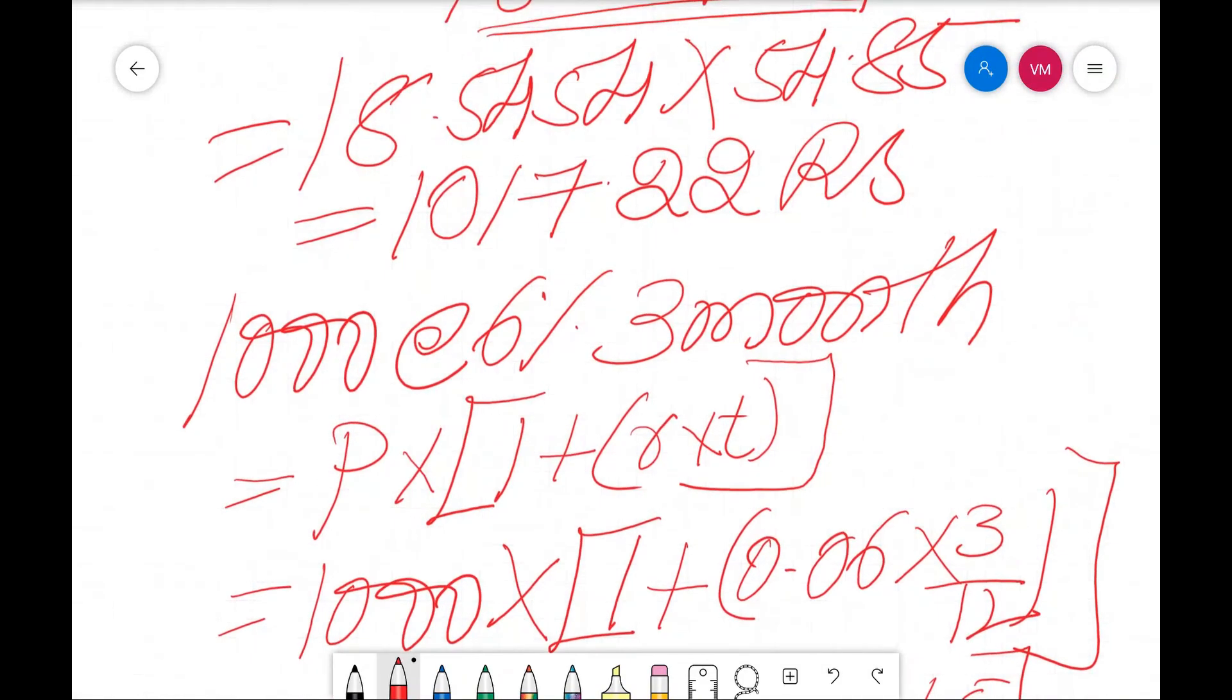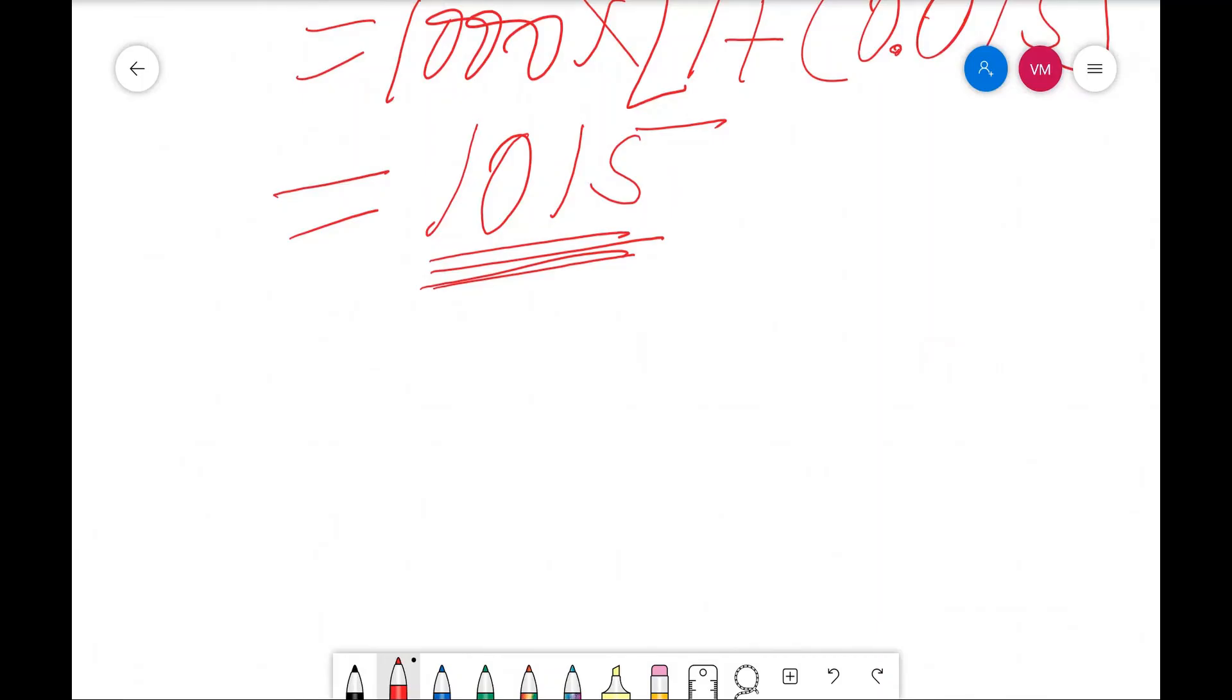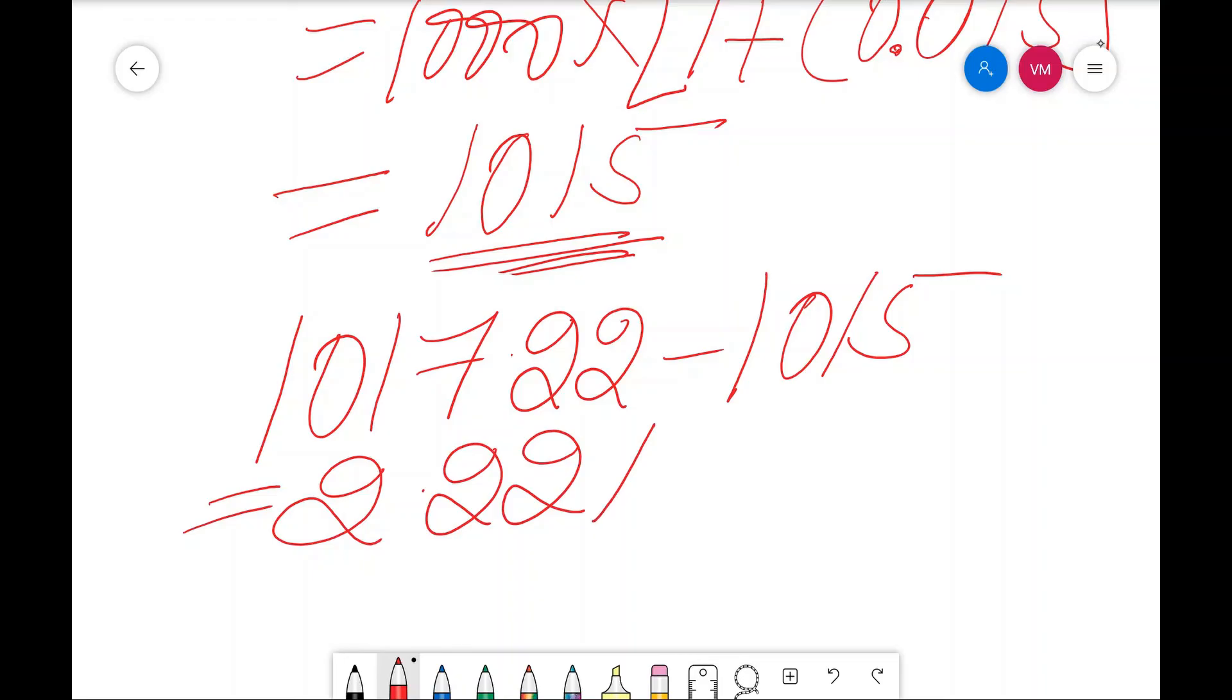But you have received 1017.22 rupees. From that you repay it. How much profit? 1017.22 minus 1015. That is 2.22 rupees profit. This is a very small amount. We assumed only 1000 rupees. But if you invest a large amount, you will get a big profit. This is how you calculate the profit from arbitration.